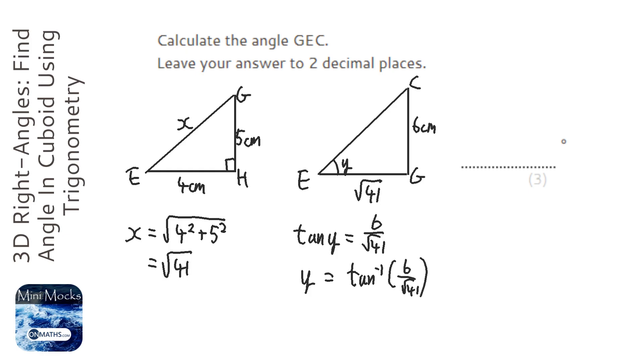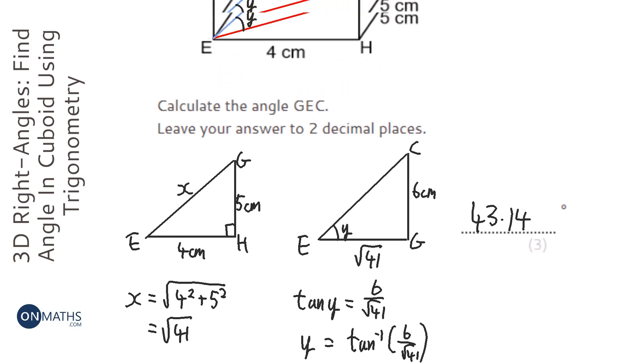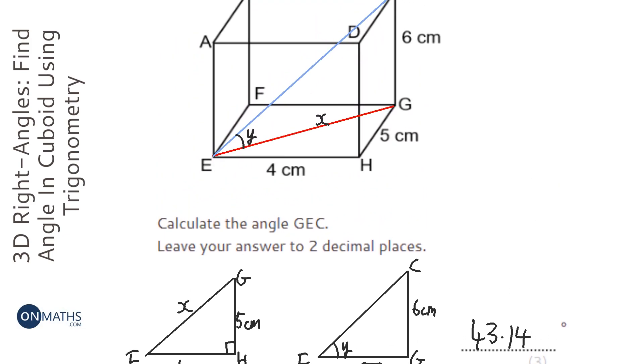I'm going to do that on my calculator: inverse tan, fraction button, six over root 41, close brackets. And I get 43.14 when it's rounded, so it's 43.14.